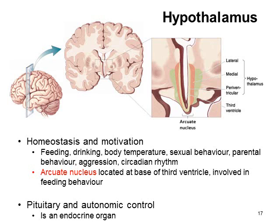The hypothalamus is one of the key structures you must know about. It functions in homeostasis and motivation: feeding and drinking behaviour, controlling body temperature, sexual behaviour, parental behaviour, aggression, and circadian rhythm. The arcuate nucleus is the lowest part of the hypothalamus, located at the base of the third ventricle, and is directly involved in feeding behaviour. The hypothalamus controls the pituitary and autonomic control and is therefore an endocrine organ. It is split into sections by location relative to the third ventricle: the arcuate nucleus at the bottom, then the periventricular, medial, and lateral hypothalamus moving further out.